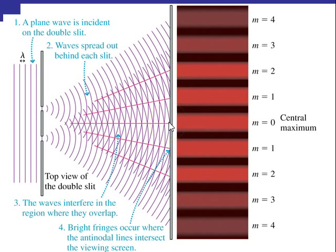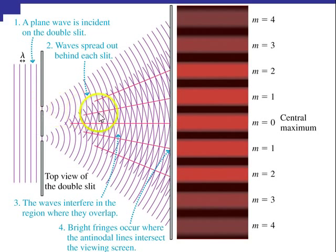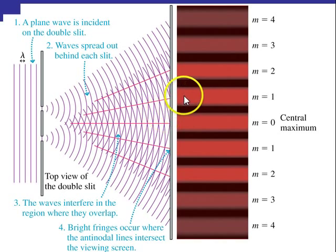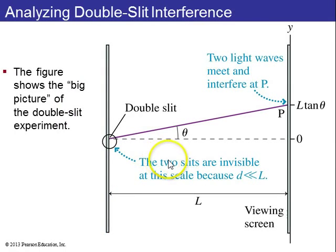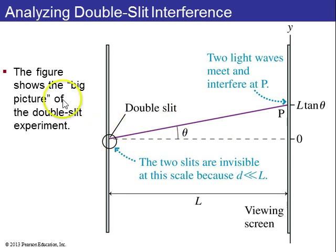If you go up a little ways, there will be half a wavelength more distance from the bottom slit than from the top slit, and you'll have perfectly destructive interference — a dark fringe. So it goes constructive, destructive, constructive. To get the math behind it, you draw the big picture of the double slit experiment. At this scale you don't really see the slits — they're very close together — with a viewing screen way over on the other side.